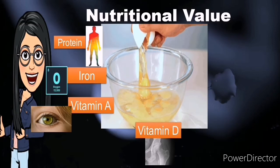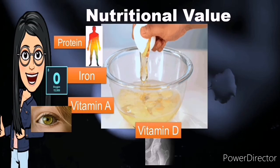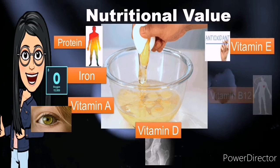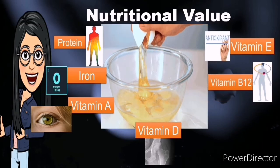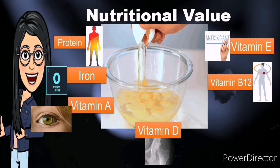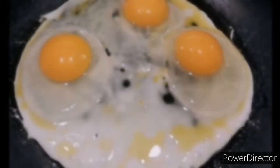Vitamin D is a substance that your body needs to grow and develop normally. Vitamin E acts as an antioxidant in our body, helping to protect your cells from damage. And B12 keeps nerve and blood cells healthy.